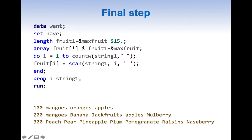Now let's look at the do loop. We say DO i = 1 TO COUNTW(string1), and then fruit[i] = SCAN(string1, i). When i equals 1, we reference the first variable fruit1 and it gets the value of SCAN(string1, 1).